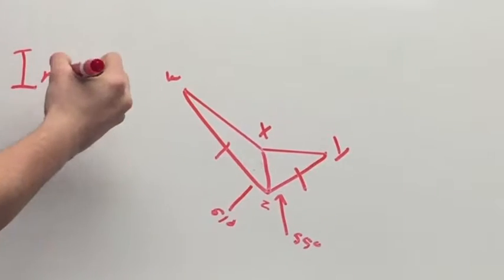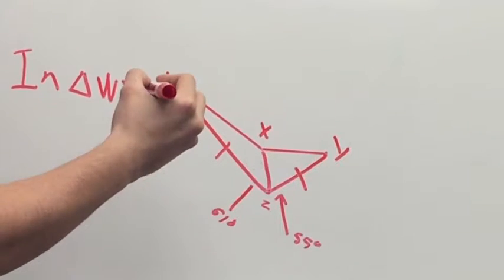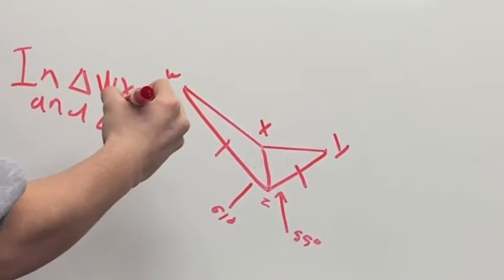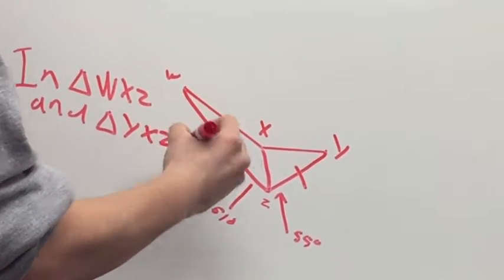Triangle WXZ and triangle YXZ, line WZ is congruent to line YZ, and line XZ is congruent to line XZ.